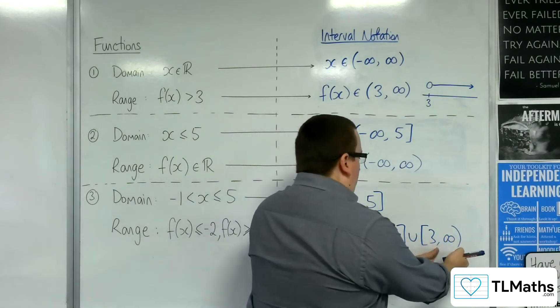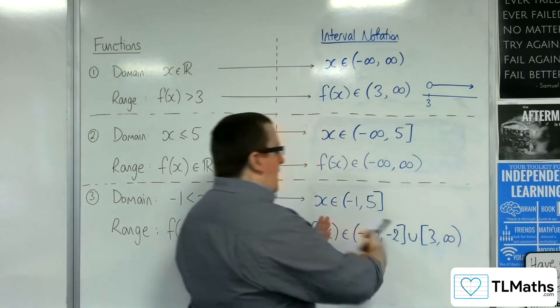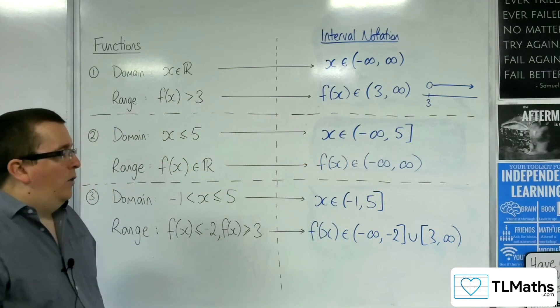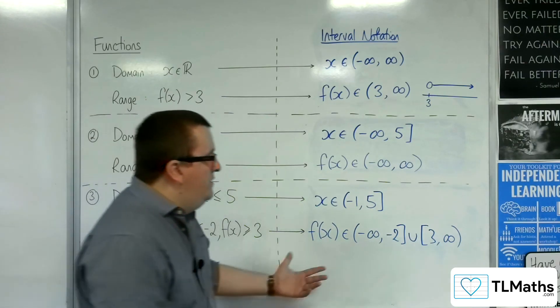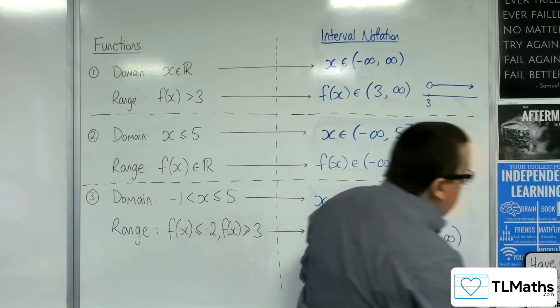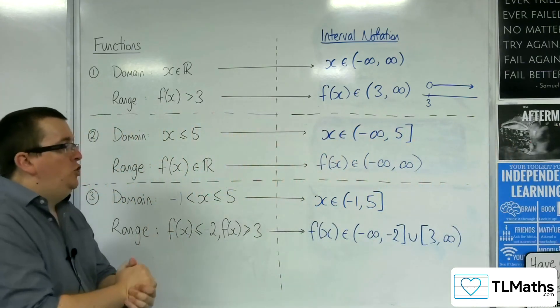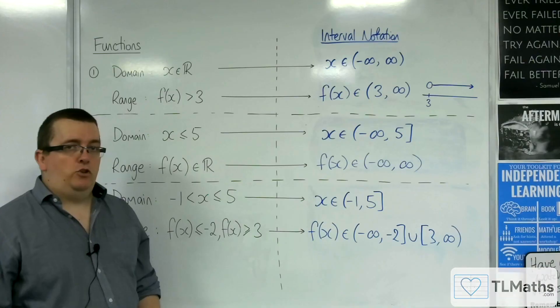So, I must use the union to say, I want this or this. And that is how we would have to write it in interval notation. There's kind of no real getting around that. So, that's how we can write the domain and range of a function in interval notation.